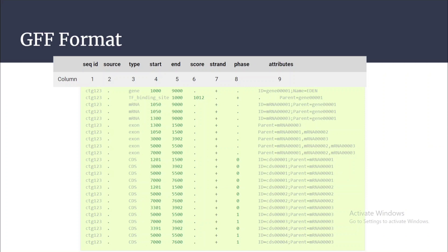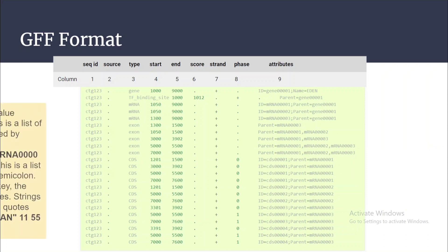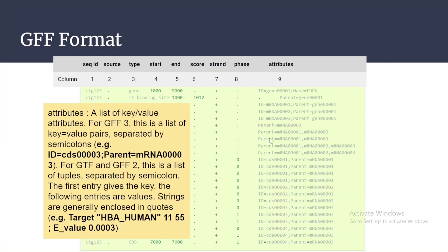The ninth column is the attributes, which contains information related to the ID, name, parent, and other details. Attributes are stored as a list of key-value pairs. In GFF3, these key-value pairs are separated by semicolons — so we have the first key-value pair, then a semicolon, then the second key-value pair, and so on with multiple pieces of information.